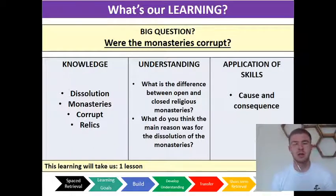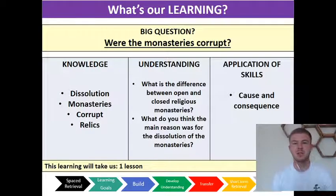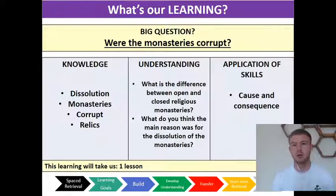I'm going to break that question down in our keyword section in a moment. Our keywords are dissolution, monasteries, corrupt, and relics. By the end of this short video, I want you to be able to answer these questions: what's the difference between open and closed religious houses? And what do you think the main reason was for the dissolution of the monasteries? In terms of our skills today, we're looking at cause and consequence.